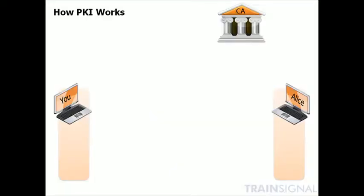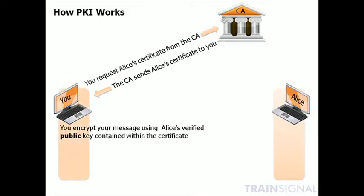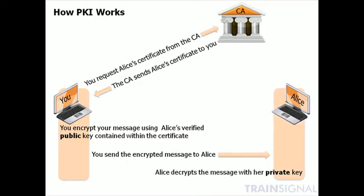Now that we've added the CA, that secure message transfer gets even better. Alice has already registered and has a digital certificate from the CA. You request Alice's certificate from the CA — one of the CA's responsibilities is distributing the certs. We know it actually belongs to Alice because it's signed by the CA, and we trust the CA. You encrypt your message using Alice's now-verified public key contained within the cert, send it to Alice, and no one can decrypt it along the way without Alice's private key. She uses that private key, decrypts the message, and reads it.